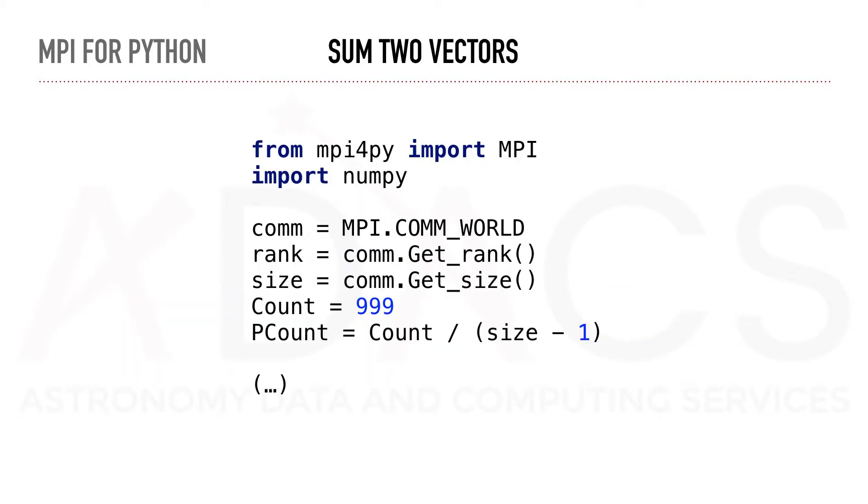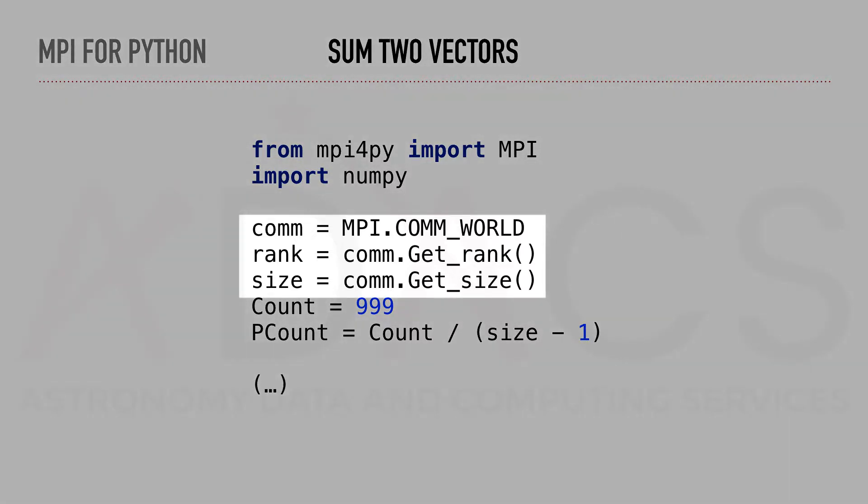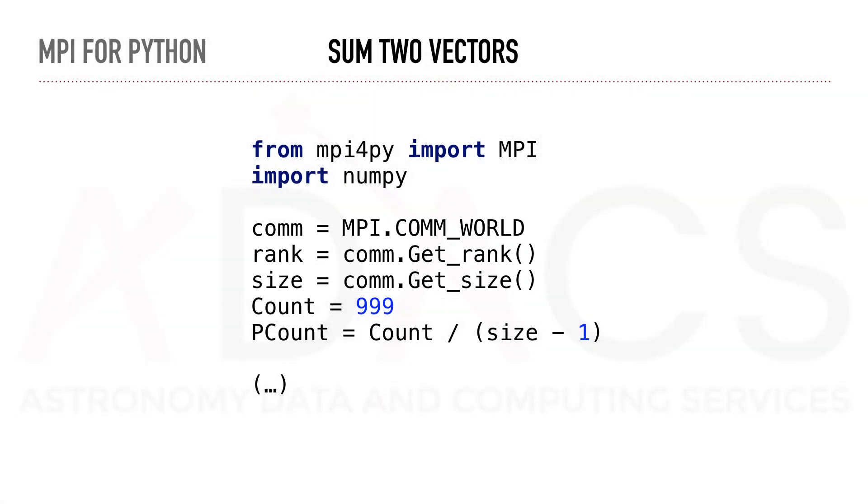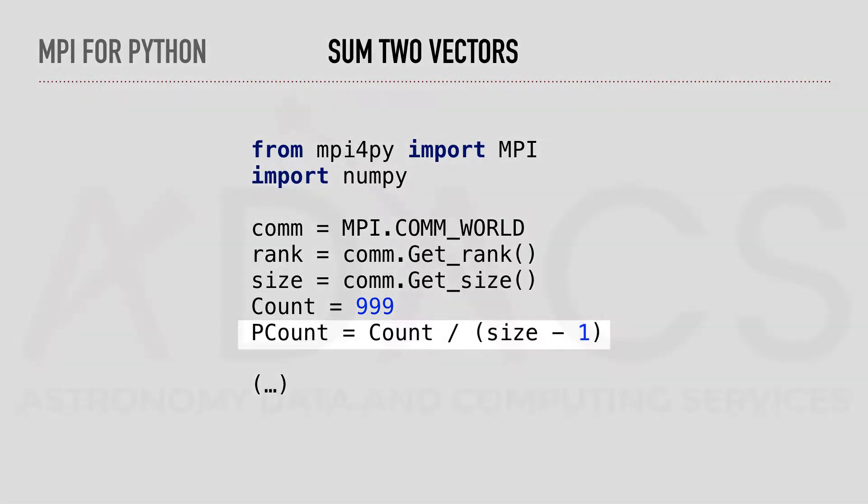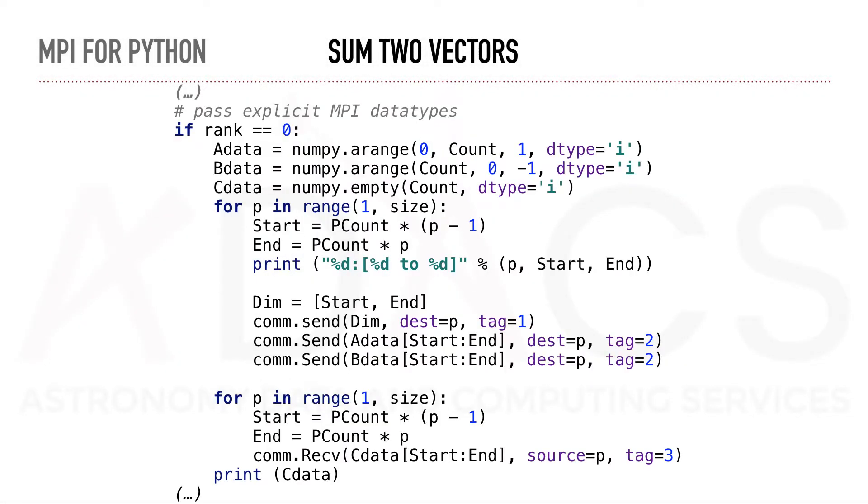Now, let's compute the sum of two vectors in parallel over a number of MPI processes. First, let's initialize a few variables like the MPI comm-world and retrieve the rank and size of the process. Then, we define the count. This will be the length of our vector. We will split the calculation of this vector over the number of processes available.